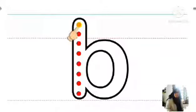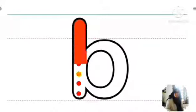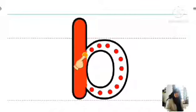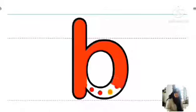To the end of the standing line. Now let's see how to write small b. Start from the top and write a standing line. Then from the middle of the standing line, draw a right curve and bring to the end of the standing line.